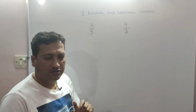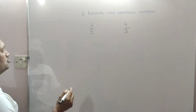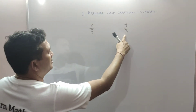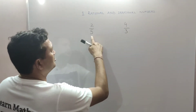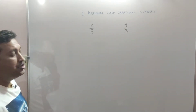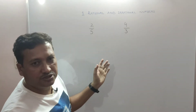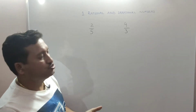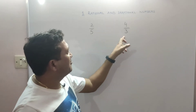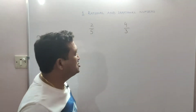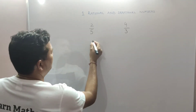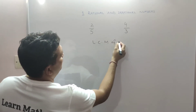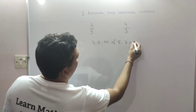There are two methods. The first method is that we are going to make the denominator of both rational numbers the same — we are going to convert these two rational numbers to have the same denominator. We need to take the LCM of 5 and 3, so LCM of 5 and 3 is 15.